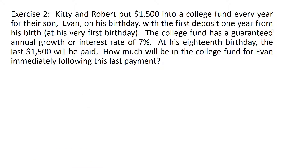Now let's look at exercise two. Kitty and Robert put $1,500 into a college fund every year for their son Evan on his birthday, with the first deposit one year from his birth — at his very first birthday. The college fund has a guaranteed annual growth rate of seven percent. At his 18th birthday the last $1,500 will be paid. How much will be in the college fund for Evan immediately following his last payment?